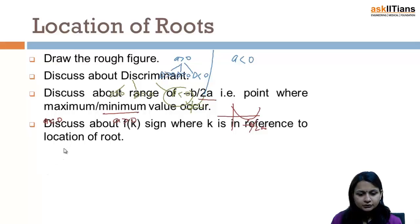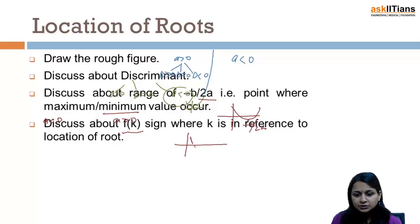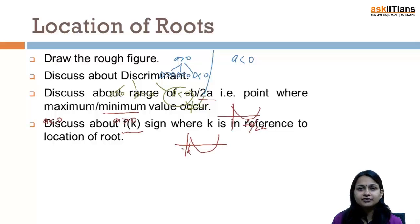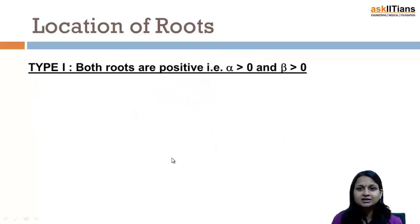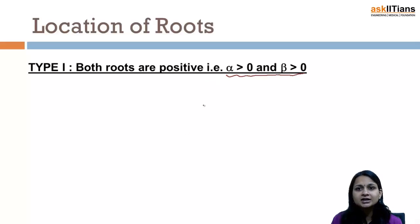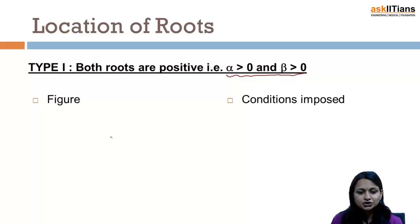Finally, we talk about f(k) sign, where k is in reference with the location of roots. Suppose it's written that both roots are greater than k — so we can talk about what is the sign of f(k). These things will be more clear as we discuss more types. The first type is when both roots are positive: alpha greater than zero and beta greater than zero.